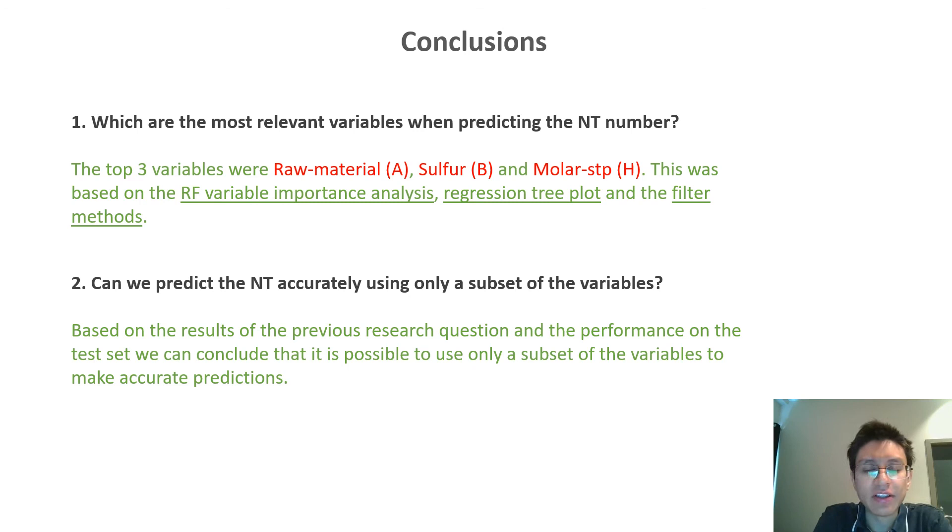These are the initial research questions, and for the first one we found that the most important variables were the amount of raw material, the amount of sulfur, and the molar weight. For the second research question we also found that it is possible to train accurate prediction models using only a subset of the variables.